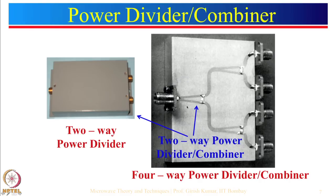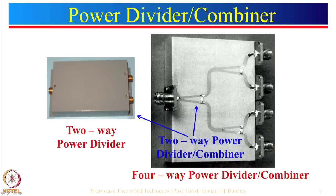After that we looked at an example. This is the fabricated one and this is the inside PCB layout for the 4-way divider. It is not necessary that you always put the ports on one side only. If it is acceptable that 2 ports can be on one side and 2 ports on the other side, then from each side you can use a power divider and have a connector right there.